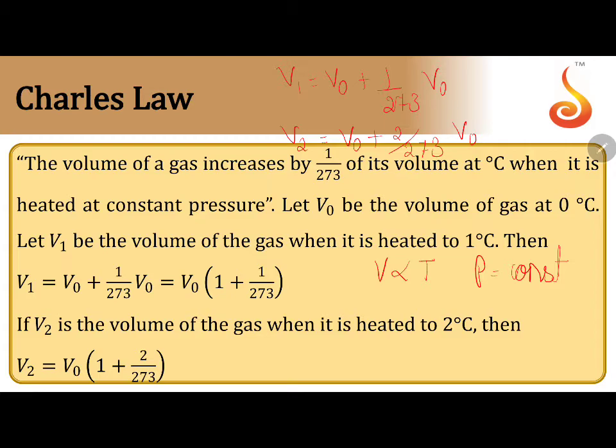Now if we remove the proportionality symbol and introduce a constant, then you would be able to write V by T is equal to a constant, or you can also write V₁ by T₁ equals V₂ by T₂.